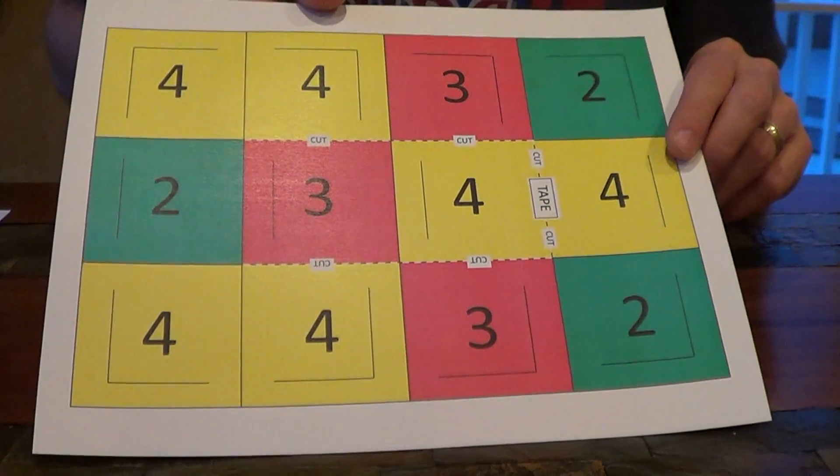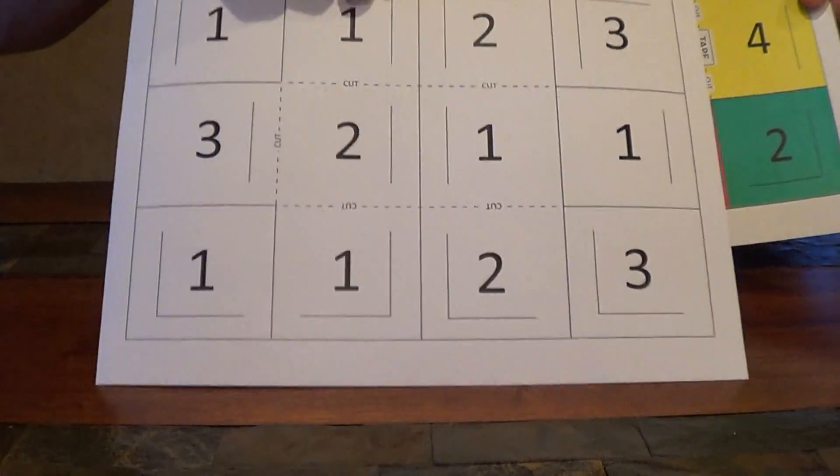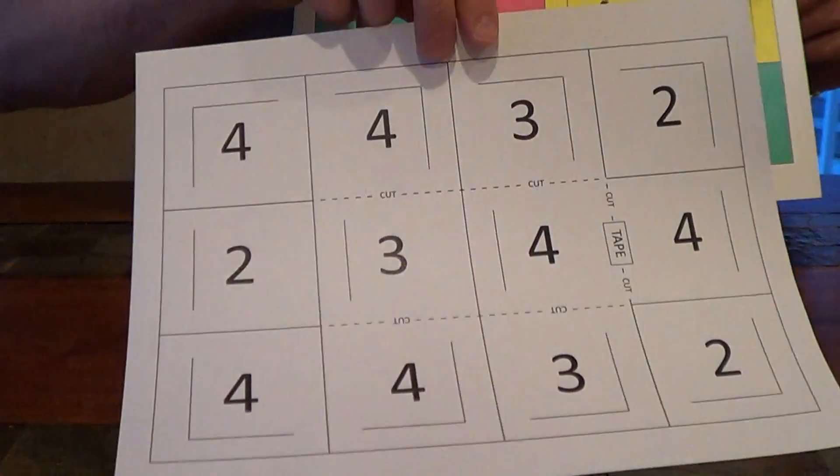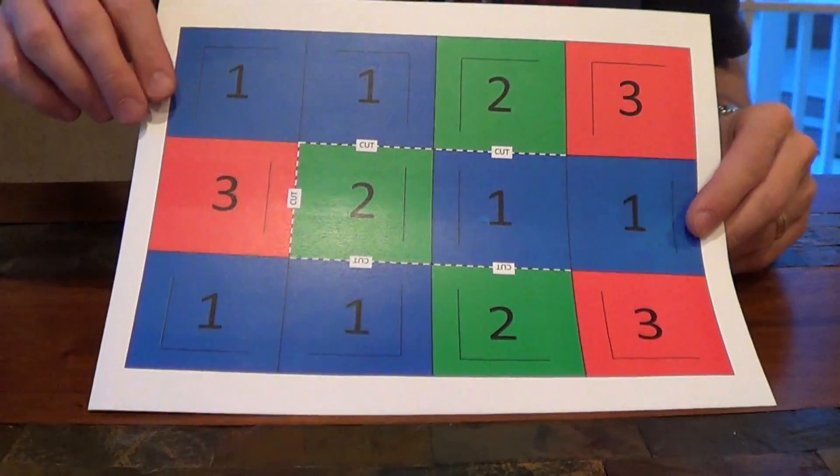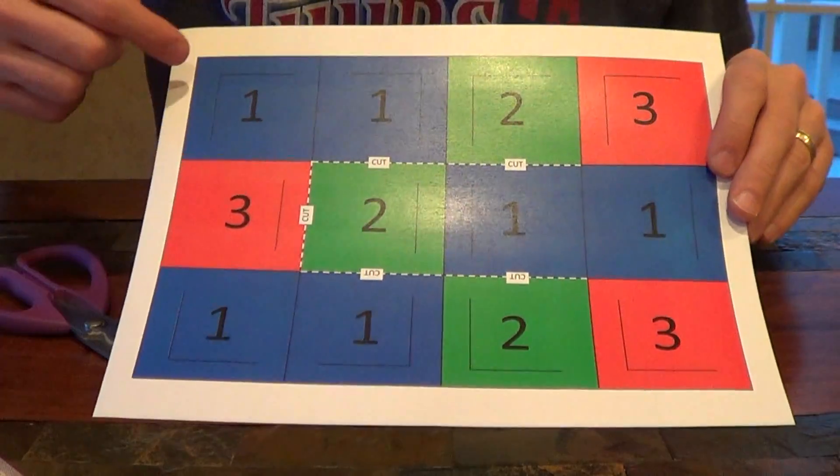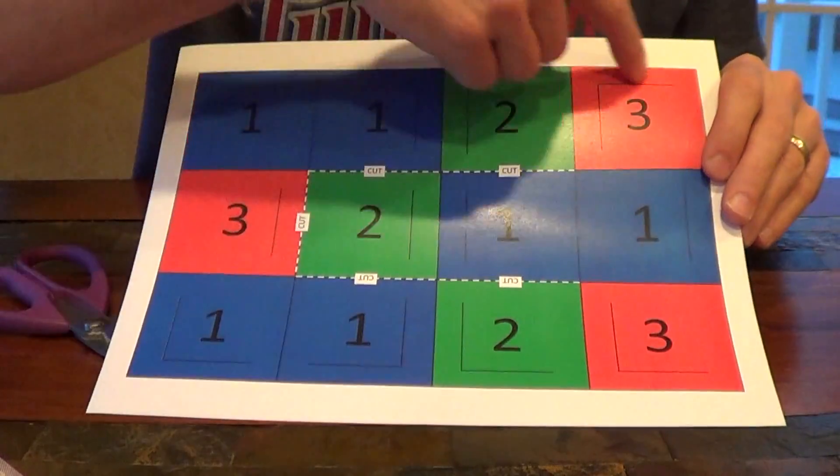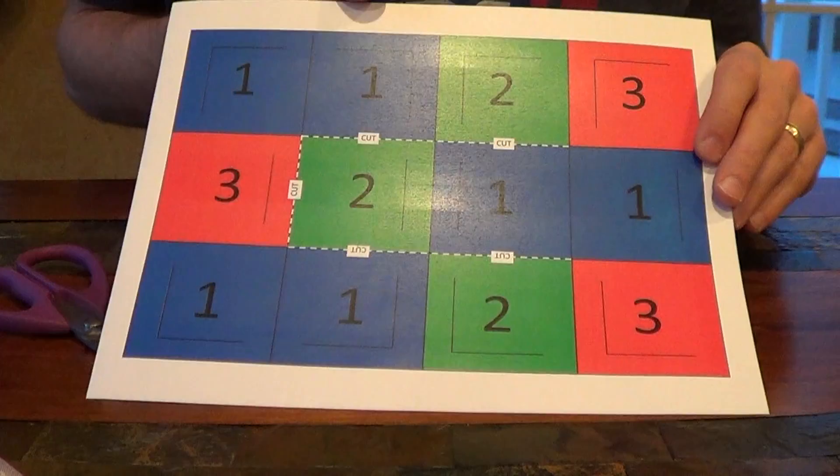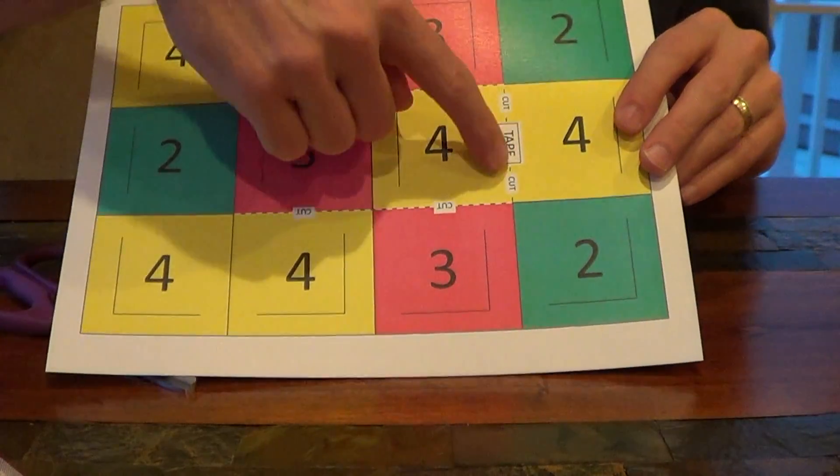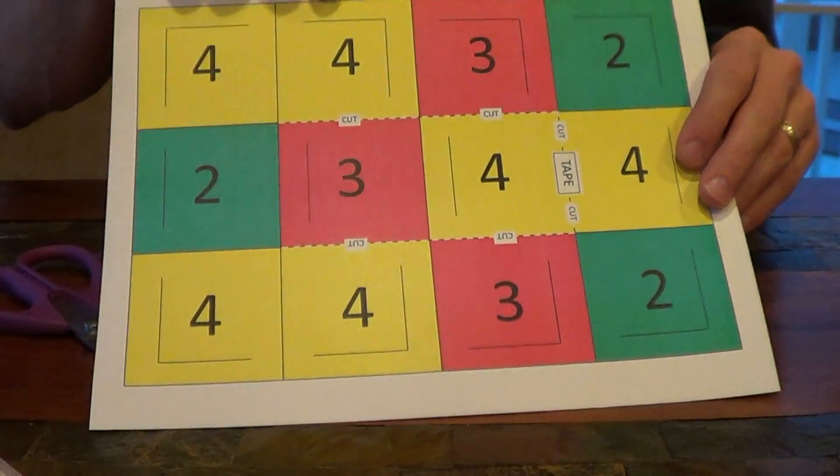So you can either print it out or else print off a blank one and just label, cut off the pictures and glue them right on here. So this is one that's from the computer. Just print it off, then I'm going to cut out and show you first. So what you're going to do is cut along the outside, cut along this inside part, and then the rest of the lines are going to be folded. There's also one piece that needs to be taped. It's labeled that way.